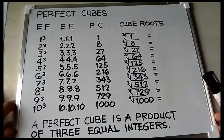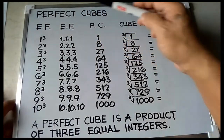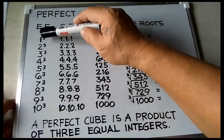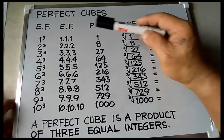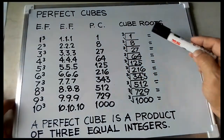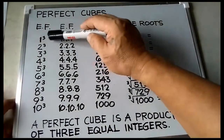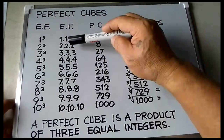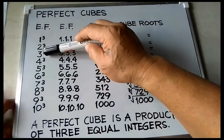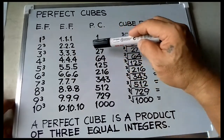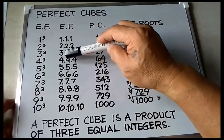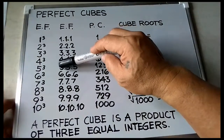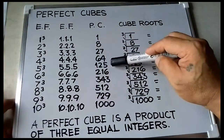For perfect cubes, we again have a chart with exponential form, expanded form, and perfect cubes. Multiply the base 3 times: 1 cubed is equal to 1 times 1 times 1, is equal to 1. 2 cubed is equal to 2 times 2 times 2, is equal to 8. 3 cubed is equal to 3 times 3 times 3, is equal to 27. 4 cubed is equal to 4 times 4 times 4, is equal to 64.